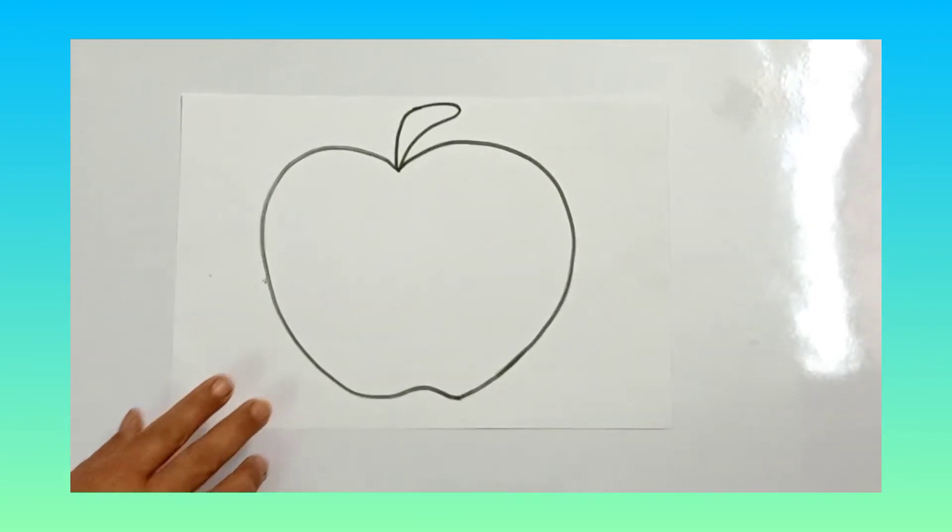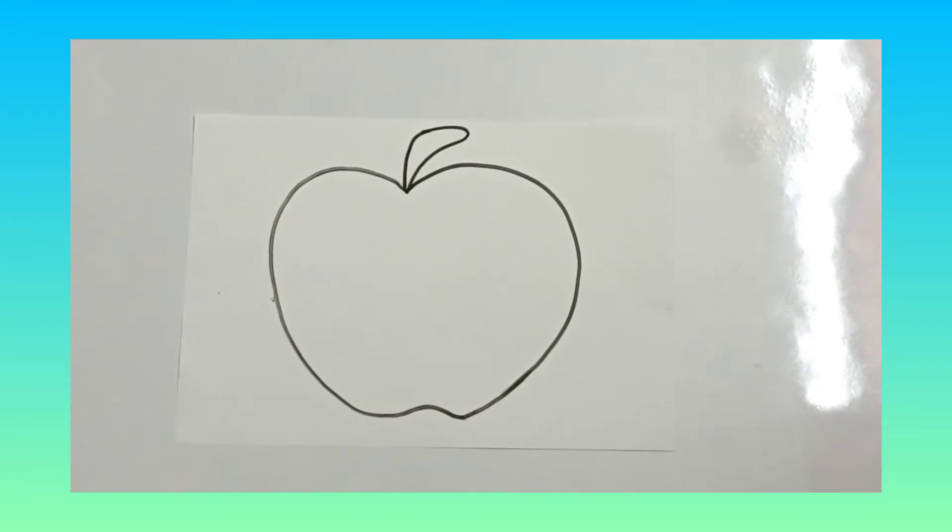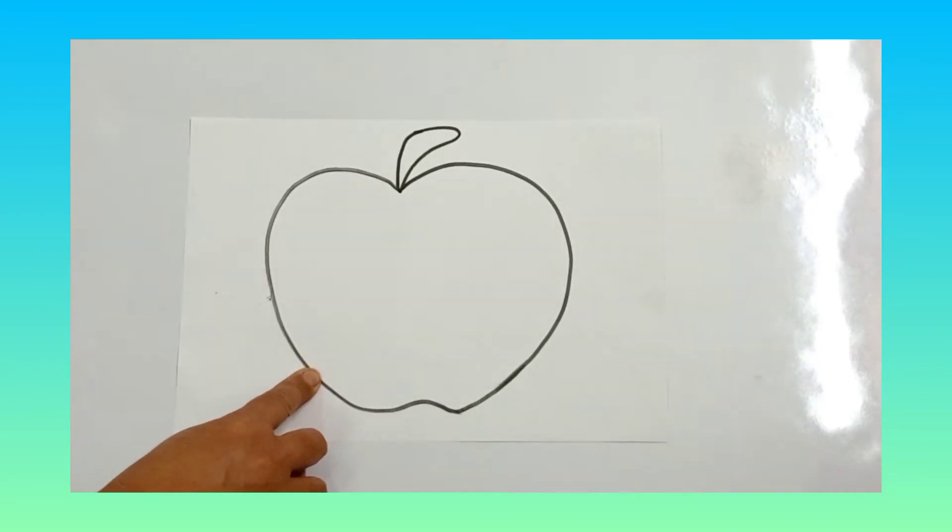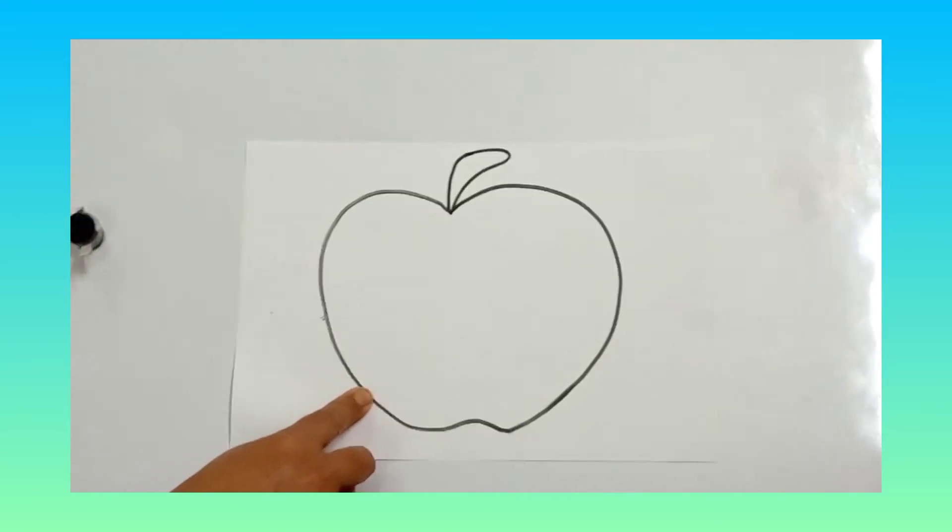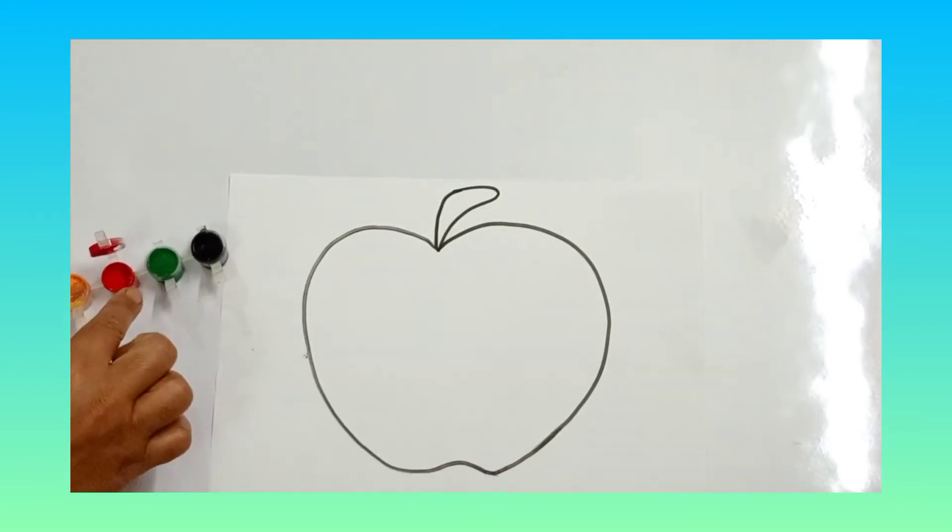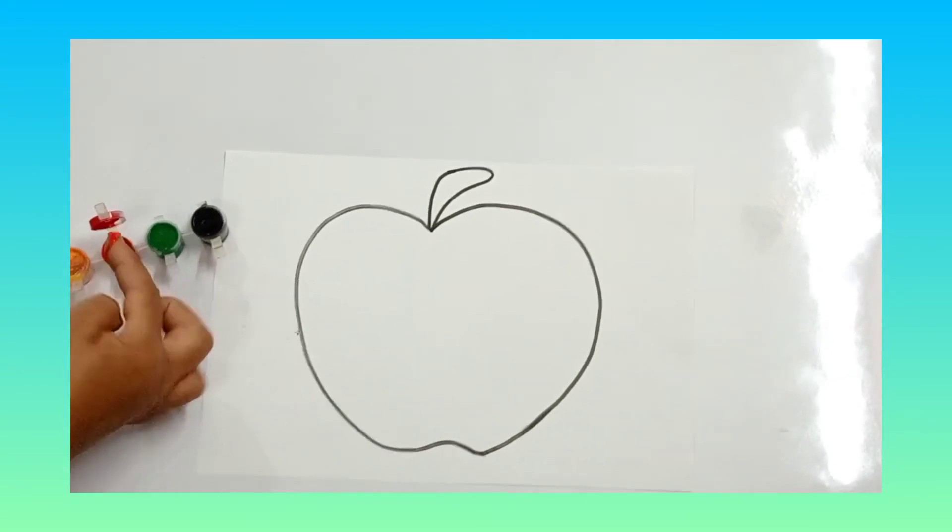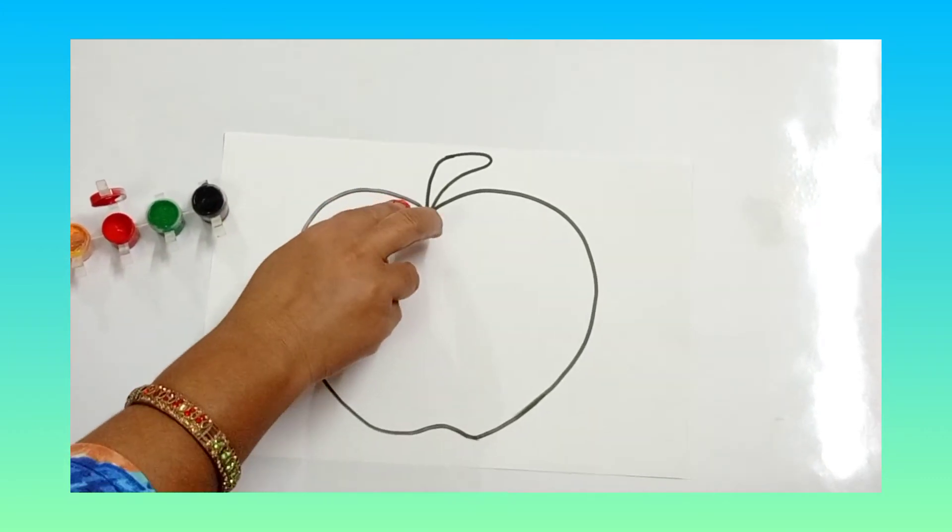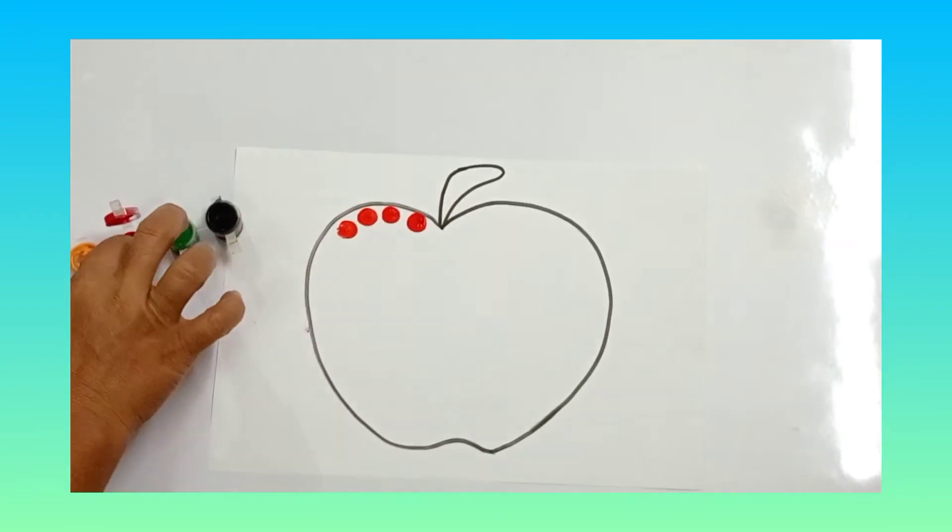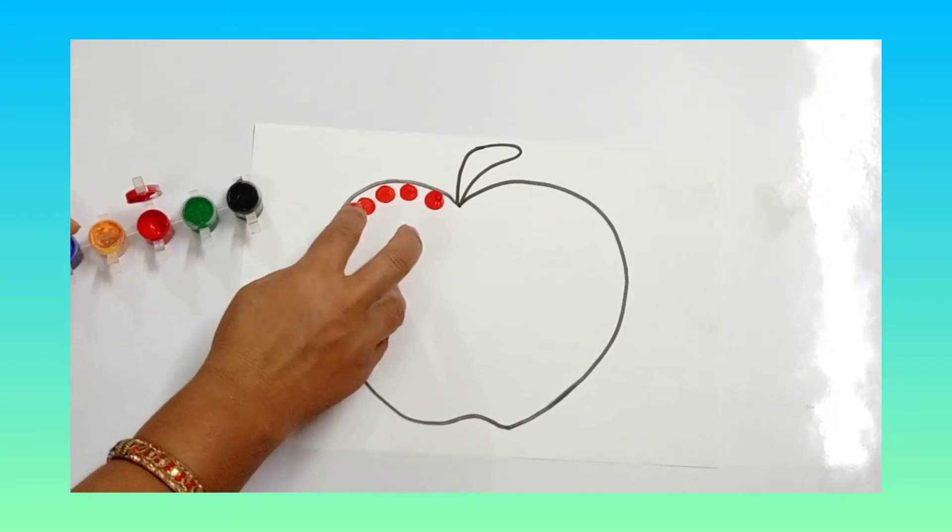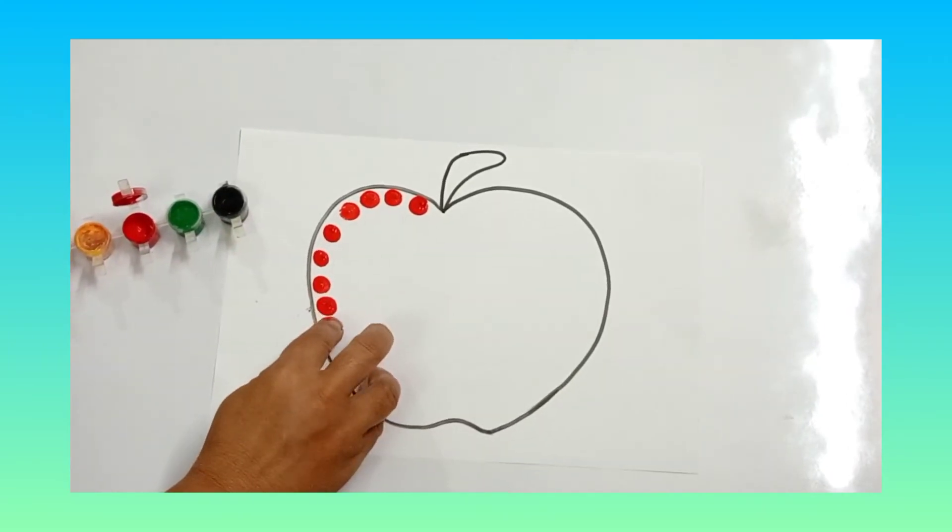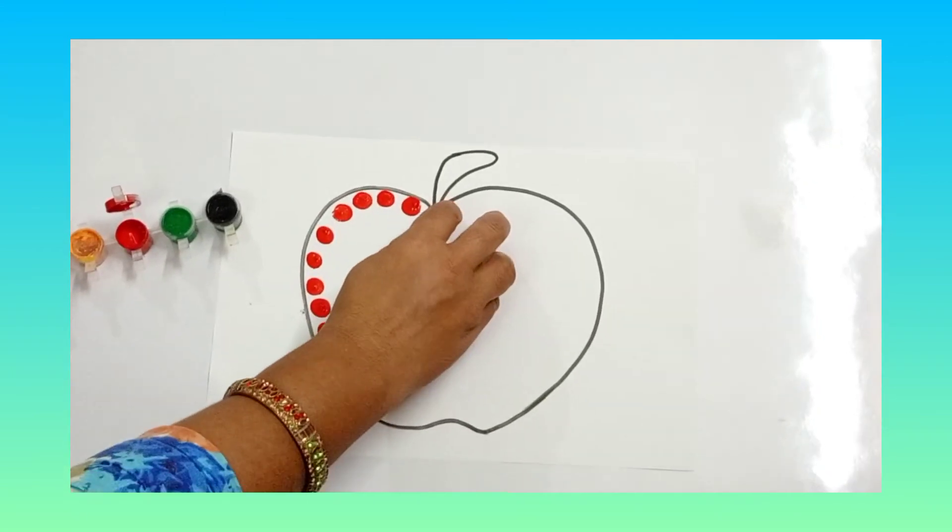Your next activity is fingerprinting. For this activity you need a hollow picture of an apple. To draw this picture you will take help from your mother. Then you will take water colors.